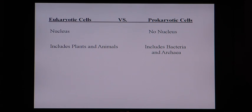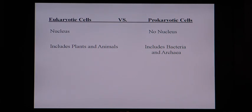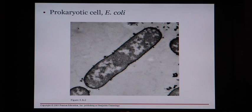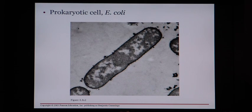Let's take a closer look, starting with prokaryotic cells — no nucleus, includes bacteria and archaea. This first picture is a prokaryotic cell, specifically E. coli. E. coli is a bacteria that can infect certain types of meat, especially beef such as ground beef, and can make people very sick or even kill them. There are differing degrees of severity among E. coli strains — some quite mild, some very nasty.